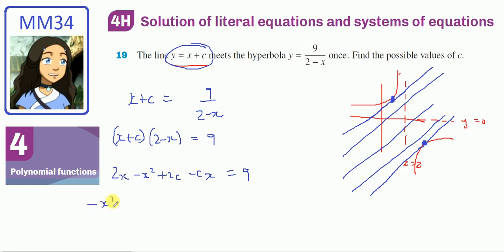Minus x squared plus 2 minus cx, plus x plus 2c minus 9 equals 0.